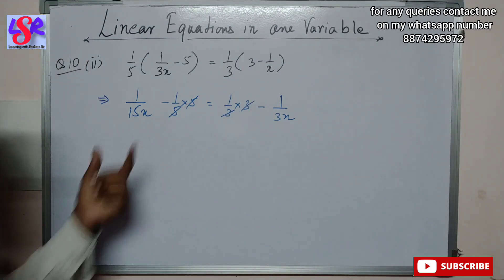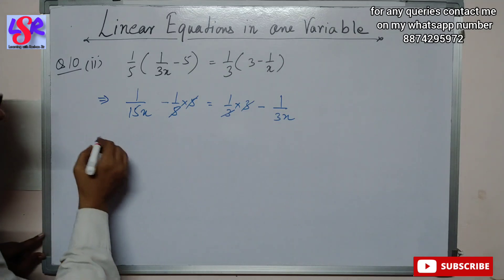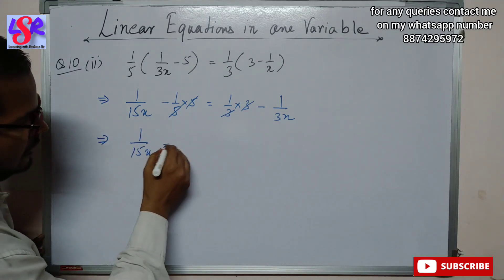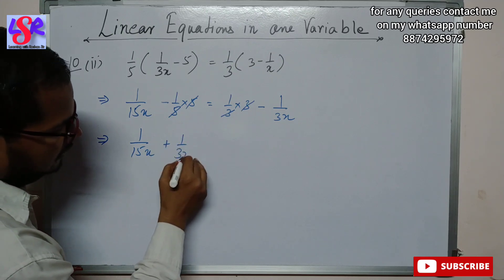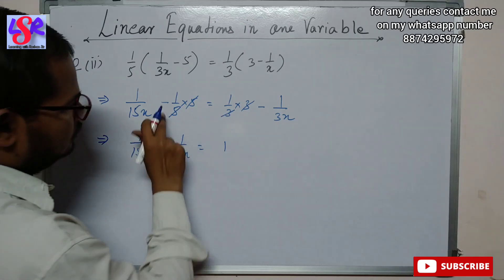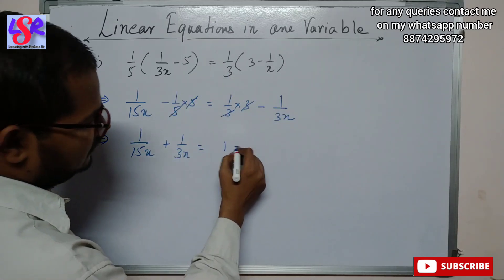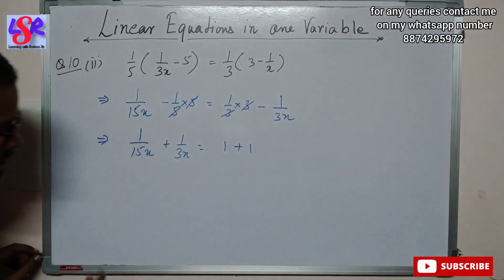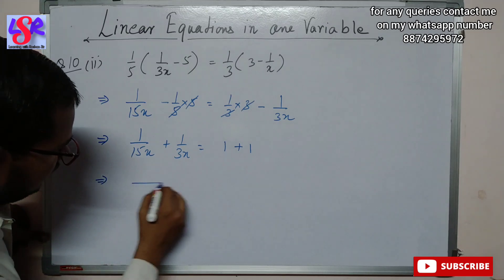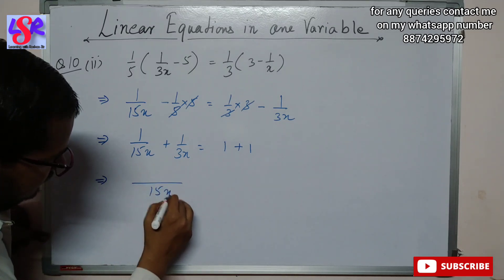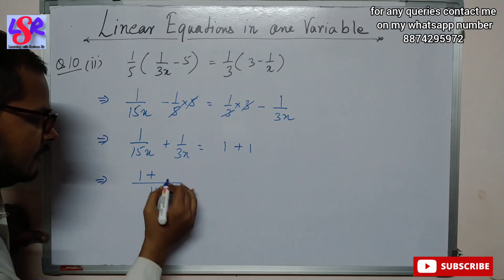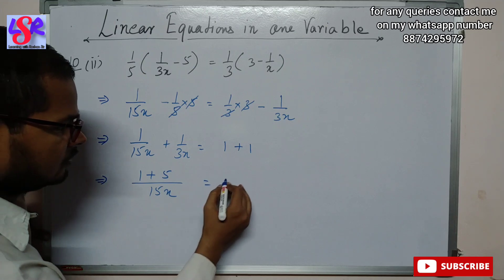Putting all variable terms on one side: 1/(15x) + 1/(3x) = 2. Taking LCM of 15x and 3x, we get 15x. So (1 + 5)/(15x) = 6/(15x) = 2.